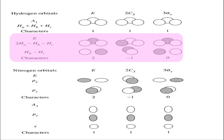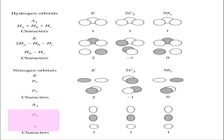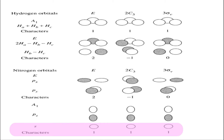Now we need to find suitable orbitals from nitrogen. The outermost orbitals of nitrogen are: the 2s orbital, 2pz, 2px, and 2py. Since E is a two-dimensional entity in the xy-plane, px and py are assigned to E symmetry, and pz is assigned to A1. The s orbital is also A1. The s orbital is spherically symmetric — after identity, C3, and vertical plane operations, there is no change — giving the representation (1, 1, 1), which is A1.